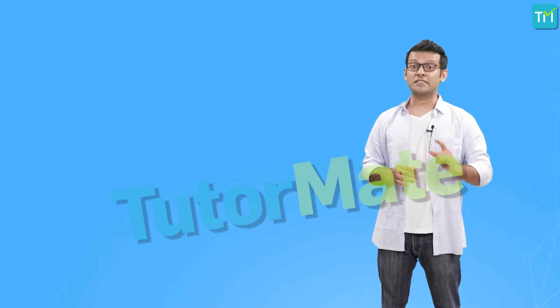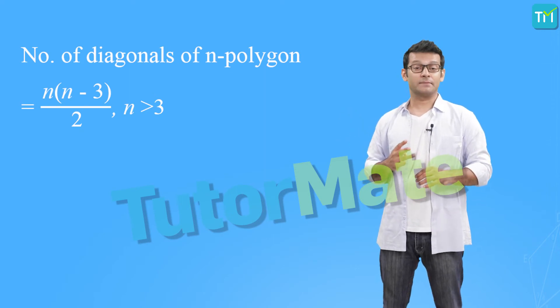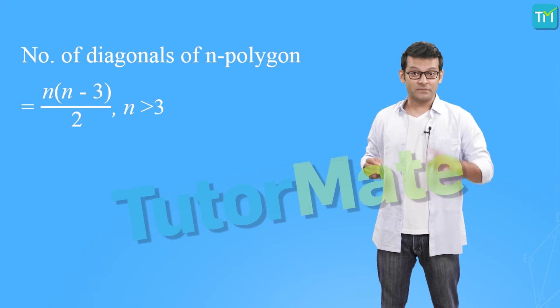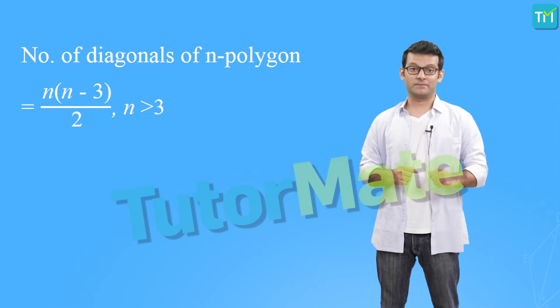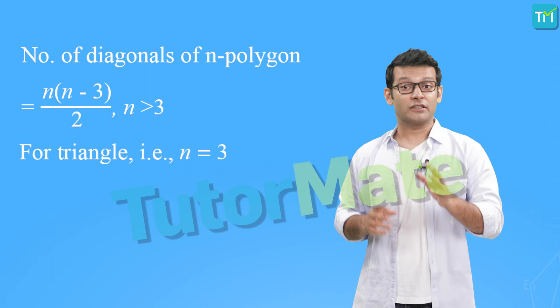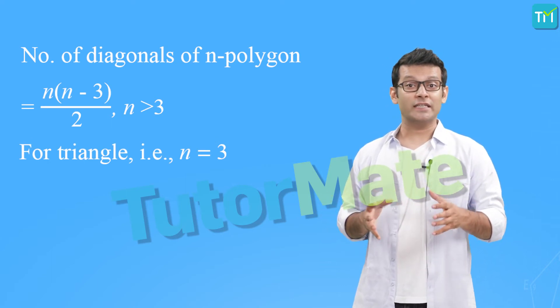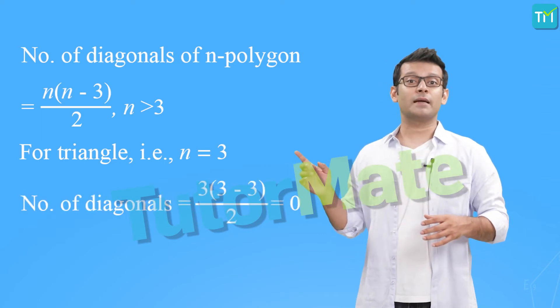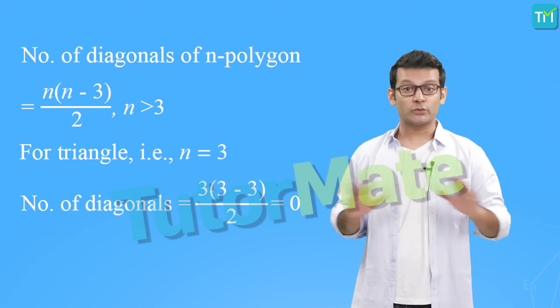Now, the number of diagonals for a polygon is fixed and it is determined by a formula. Say, if there is an n-sided polygon with more than 3 sides, that is n is greater than 3, then it has n(n-3)/2 diagonals. And so if we consider a triangle, n is equal to 3. If we put n equals 3 in this formula we get the number of diagonals as 0. So we know that a triangle has no diagonals.